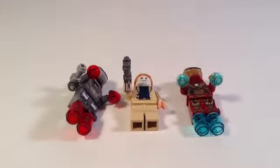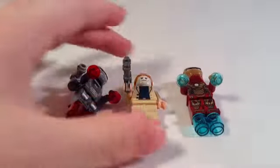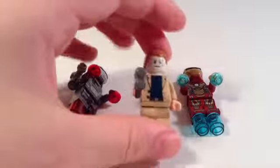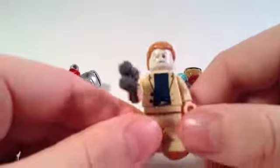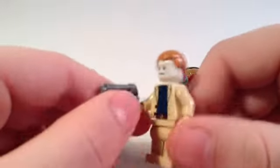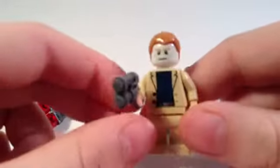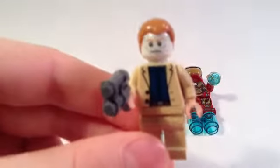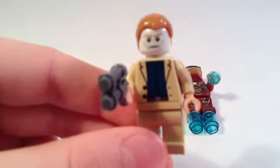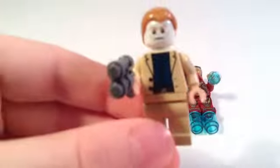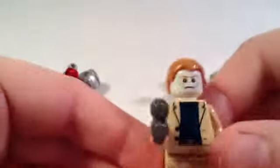Up next on the list we have the minifigures, which are pretty cool. First, my least favorite, Aldridge Killian. He's got a pistol and a very tan suit. His head does glow in the dark, but you can't really tell right now, can't really tell in the video, sorry about that.